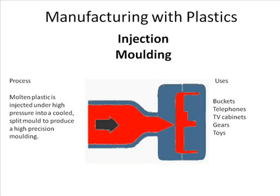Injection moulding: moulding plastics injected under high pressure into a cooled split mould to produce a high precision moulding. We can use this type of manufacturing to make buckets, telephones, TV cabinets, gears and toys.